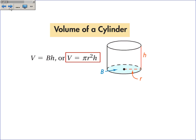The volume of the cylinder, again, it's still the area of the base times the height. The area of the base now is just pi r squared, since it's a circle. So the formula is pi r squared times h.